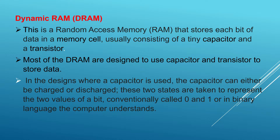Dynamic RAM is a random access memory that stores each bit of data in a memory cell, usually consisting of a tiny capacitor and a transistor. Most dynamic RAM is designed to use a capacitor and transistor to store data. Where a capacitor is used, it can either be charged or discharged — these two states represent the two values of a bit, conventionally called zero and one, the binary language the computer understands.